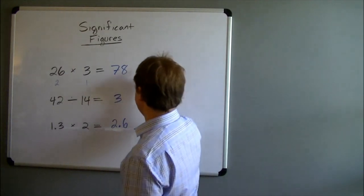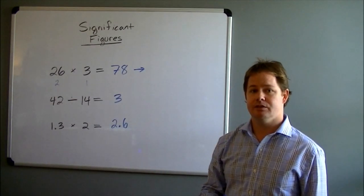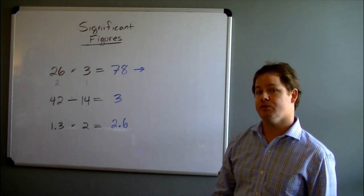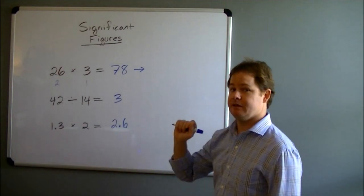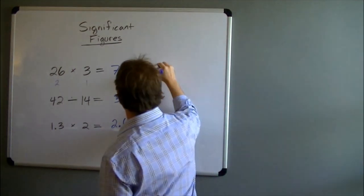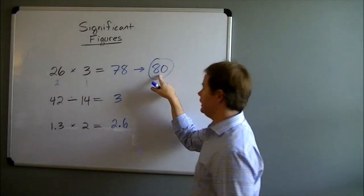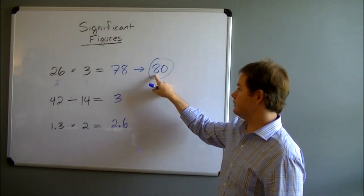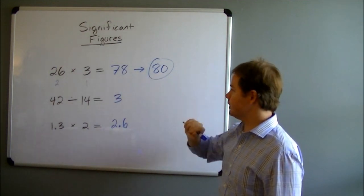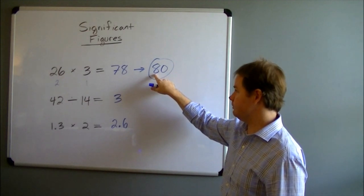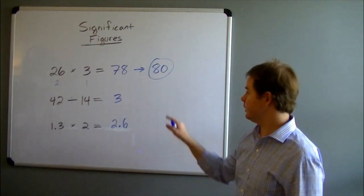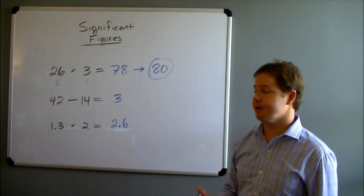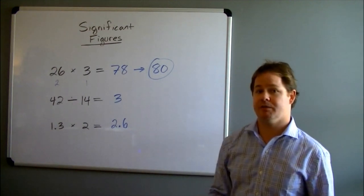And that means we need to round this number 78 to a number that has 1 significant figure. So if we do so, the correct answer will be 80. 80 has only 1 significant figure because if we remember from lesson 1, when we have zeros to the right, we only count the non-zero digits. So here, that 8 would be significant, but we would not include that zero. And that would be the final way we want to express our answer for 26 times 3 with the correct number of significant figures.